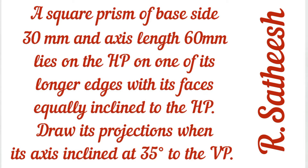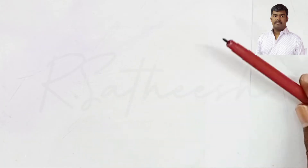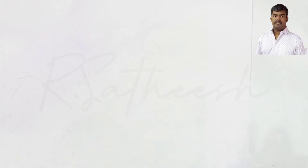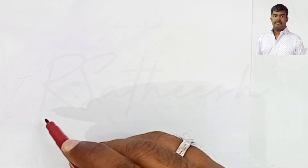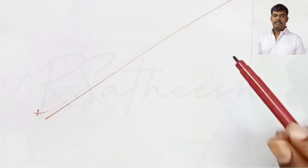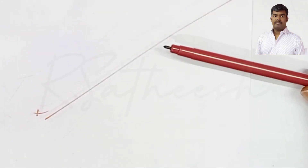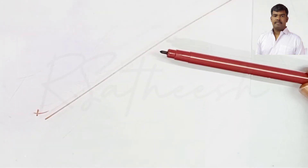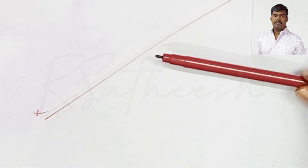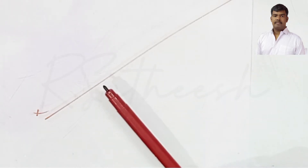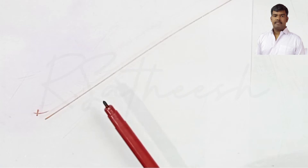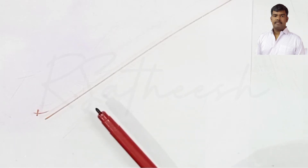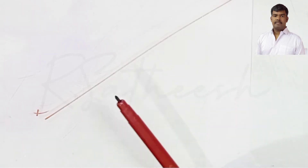The condition is the axis is inclined to VP at 35 degrees. First, draw the XY reference line. Since the axis is inclined 35 degrees, we use the change of position method. Before the change of position, we consider the axis as perpendicular. Since the solid axis is perpendicular, the true shape — a square — is visible only on the front view. Therefore, we draw the front view first.